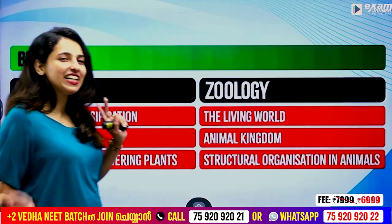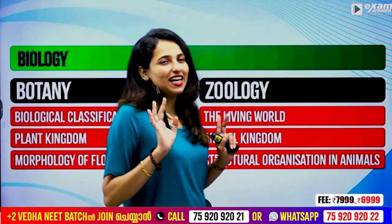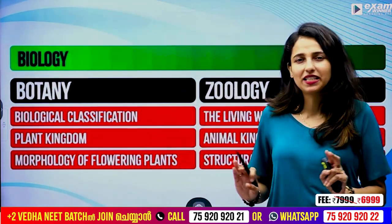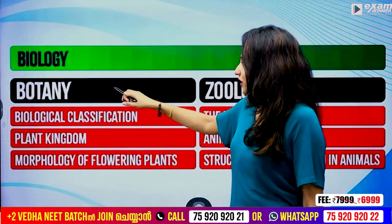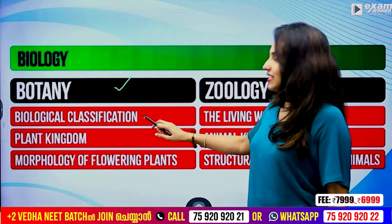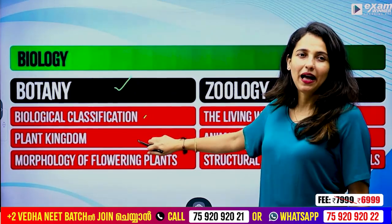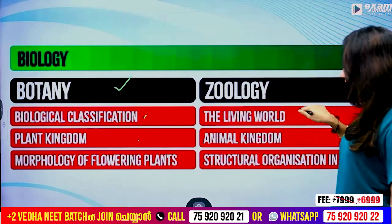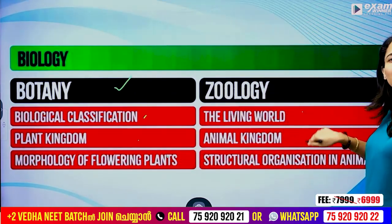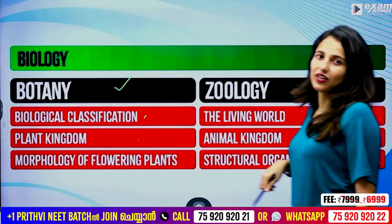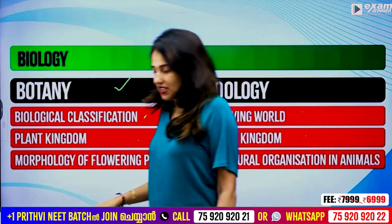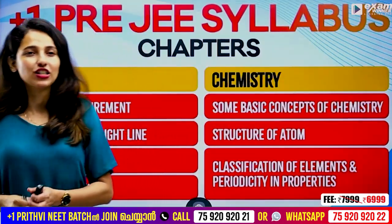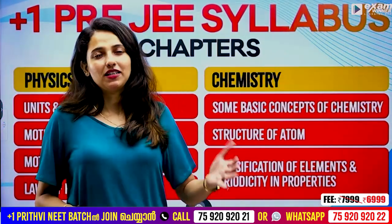In biology, we have to examine the syllabus. In botany, we have biological classification, plant kingdom, and morphology. In zoology, we have living world, animal kingdom, and structural organization in animals. So if you have one of these portions, you have to study the plus-one syllabus to be able to pass the exam.